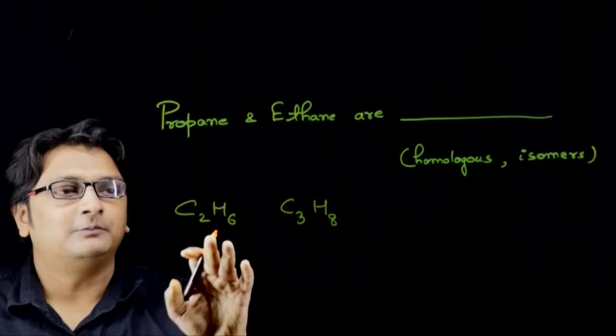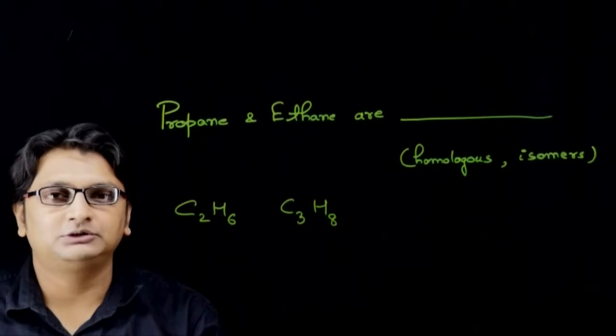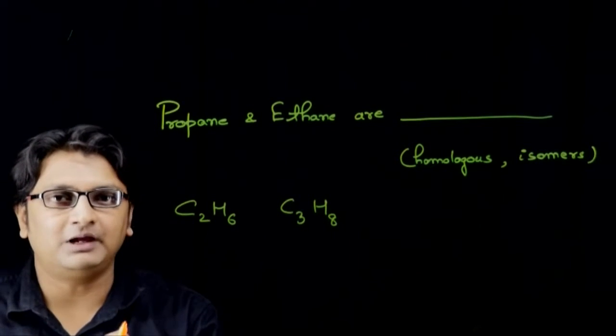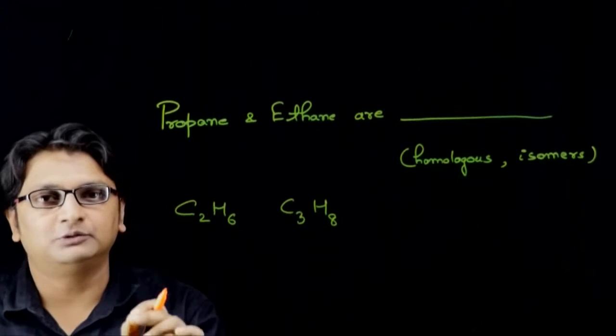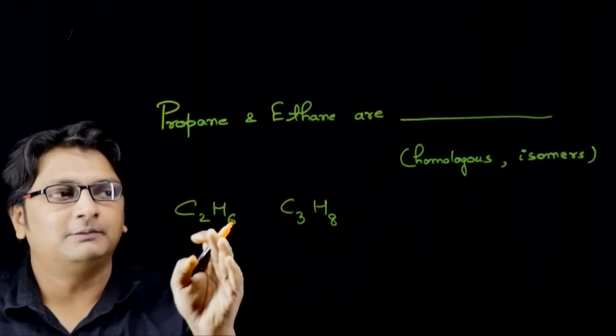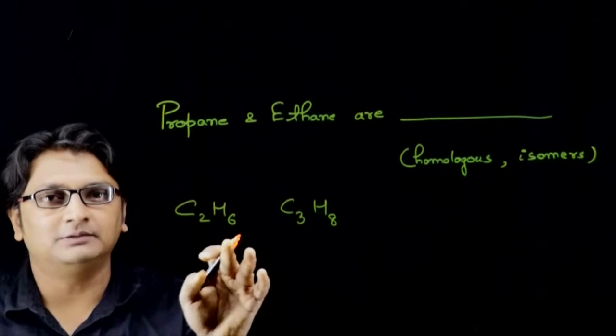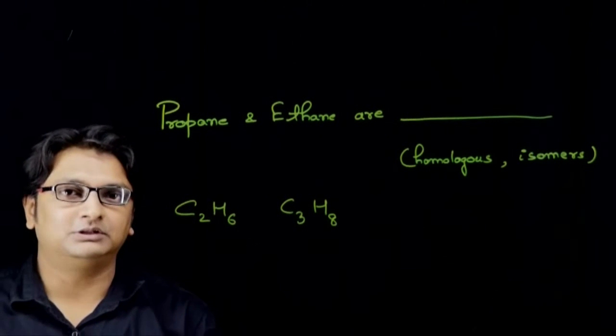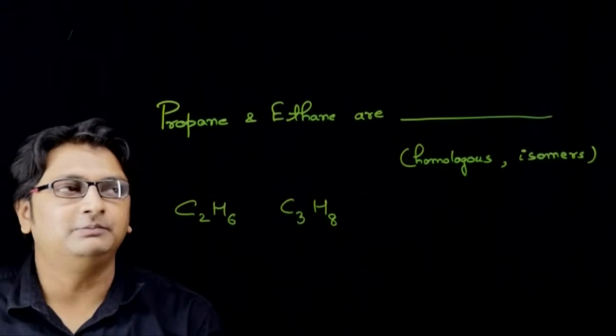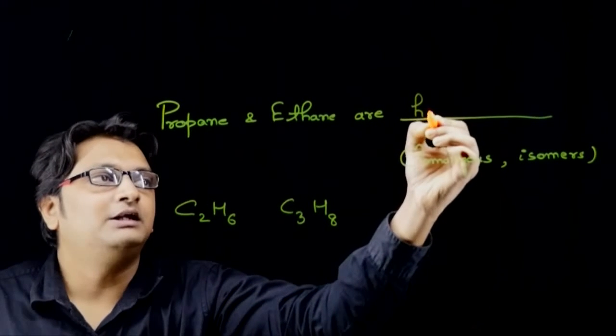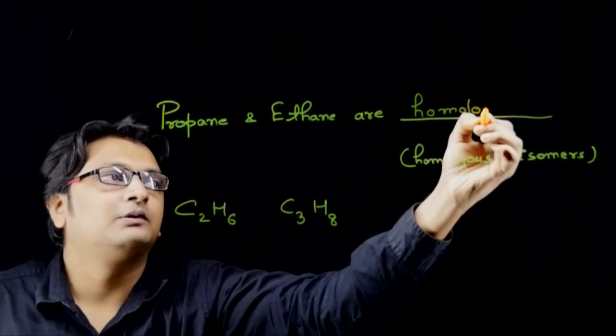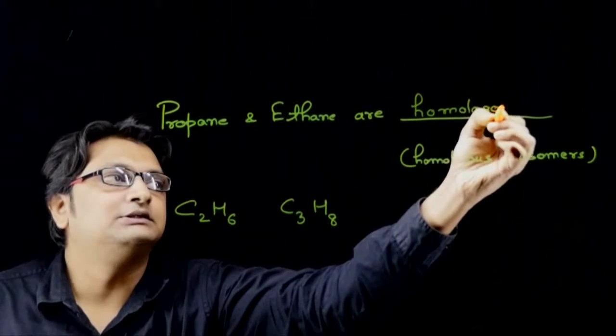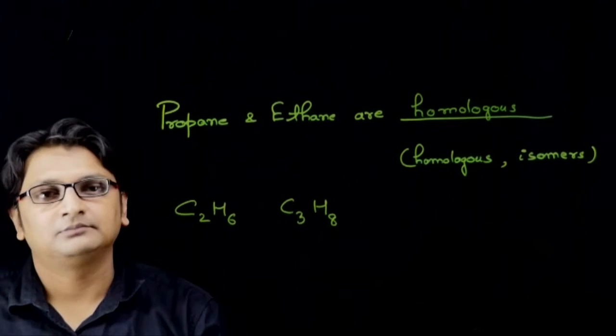As we know, ethane and propane both belong to the same alkane family. Obviously they are not isomers because the number of carbon and hydrogen atoms are different in both. So the correct option will be: propane and ethane are homologous.